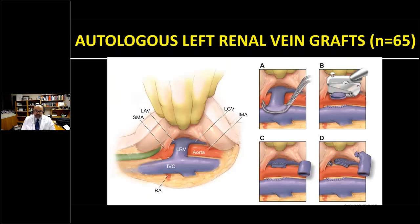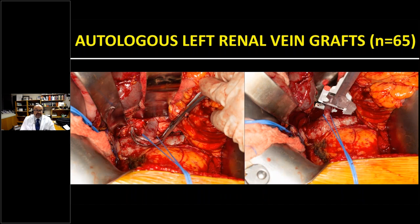The left renal vein graft harvest uses a Kocher maneuver, taking all lymphatic tissues, a side-biting clamp on the caval end, and a TA staple on the renal end. If you need extra length, ligate the left adrenal vein and angle the TA stapler to gain one to two centimeters more. The caval venotomy is subsequently closed and the graft is used as the conduit.